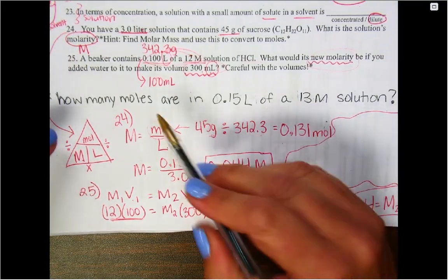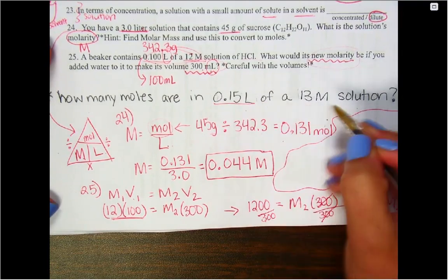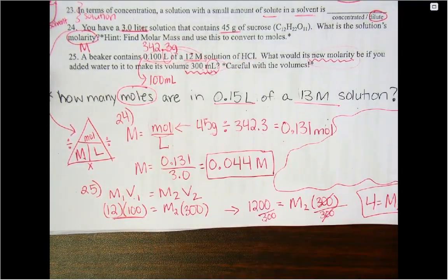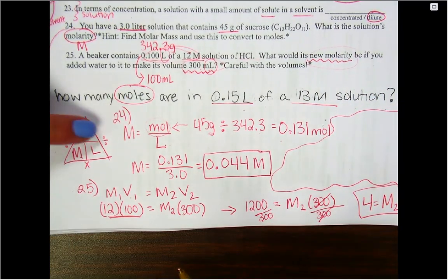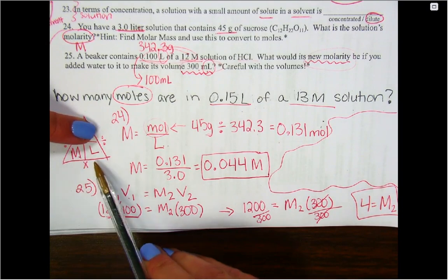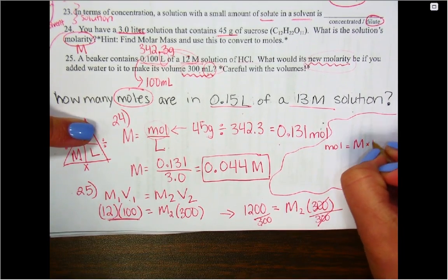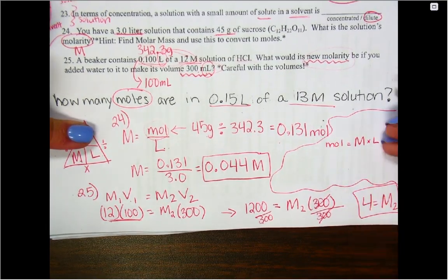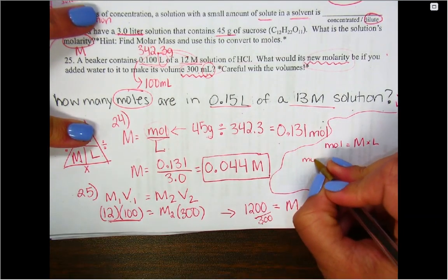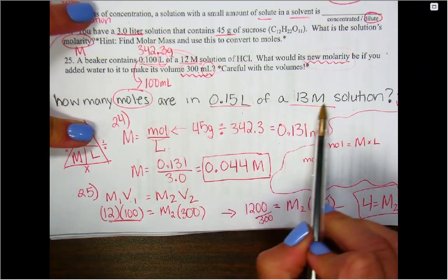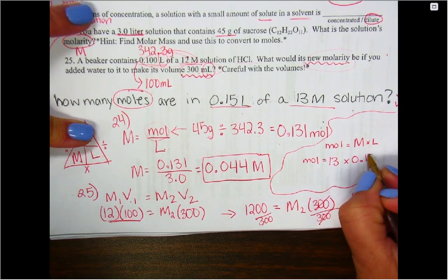All right, so the last question was how many moles are in 0.15 liters of a 13 molar solution. We have this information, we're solving for moles, so that means we're back to the triangle thing. We're going to cover up the word moles, and we're left with molarity times liters. So I'm going to go ahead and write my setup: moles equals molarity times liters, and I'm going to plug and check.